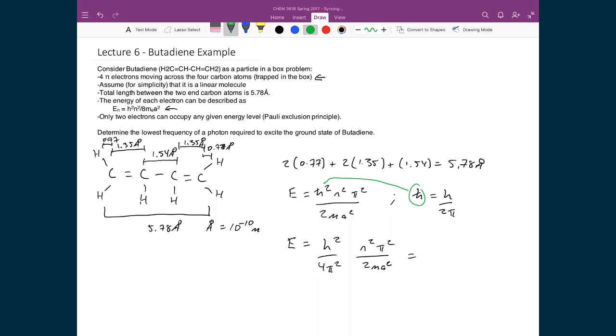And so if I do my canceling out, I can cancel out my pi's. I multiply 4 by 2, and I end up with h squared n squared over 8m a squared. And in this case, for this problem, this mass, well, that's just the mass of the electron, since we're talking about electrons moving around inside our molecule.